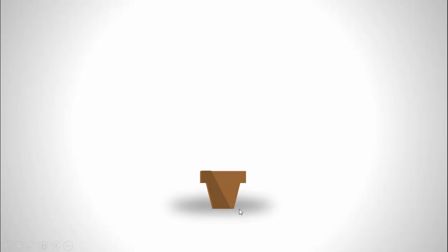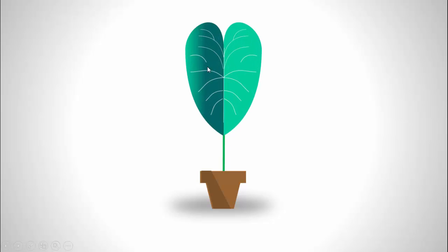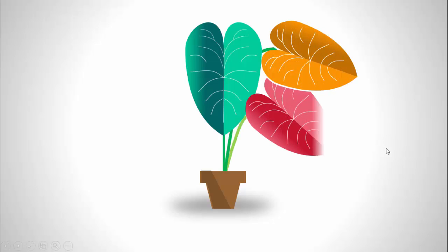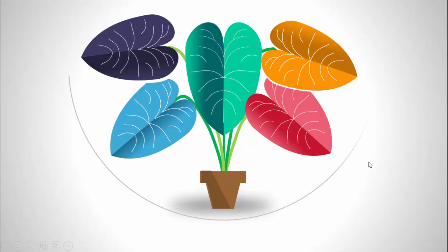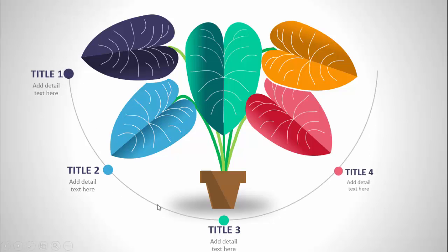In today's tutorial I'm going to show you how to create a five-options infographic slide in PowerPoint. Here's how the slide looks — I've added one flower pot with a shadow effect. When I click, the first stem comes, then the big leaf with a different color combination. Clicking further shows the second leaf, third, fourth, and fifth, each with different color combinations.